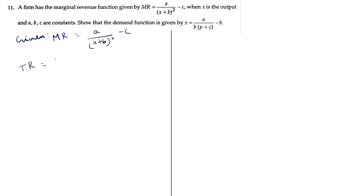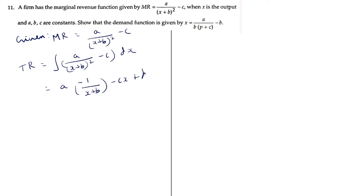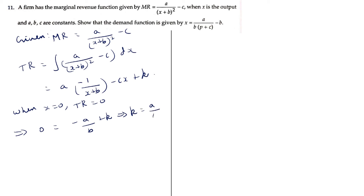TR = integral of [a/(x+b)² - c] dx. Integrating (x+b)^(-2) gives (x+b)^(-1)/(-1). So TR = -a/(x+b) - cx + k. When x = 0, TR = 0: 0 = -a/b + k, giving k = a/b.